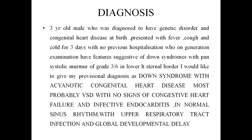Diagnosis: three-year-old male child, diagnosed with genetic disorder and congenital heart disease at birth, presented with fever, cough, cold for three days, no previous hospitalizations. On general examination, features suggestive of Down syndrome. Provisional diagnosis: Down syndrome with acyanotic congenital heart disease, most probably ventricular septal defect, with no signs of congestive heart failure or infective endocarditis, in normal sinus rhythm, with upper respiratory tract infection and global developmental delay.